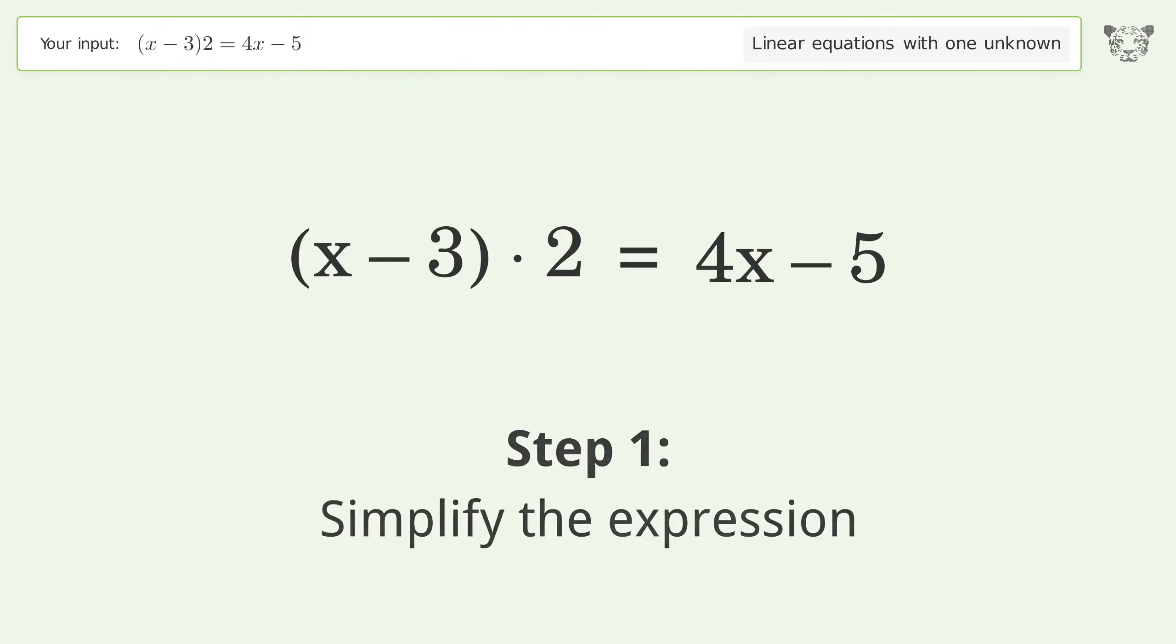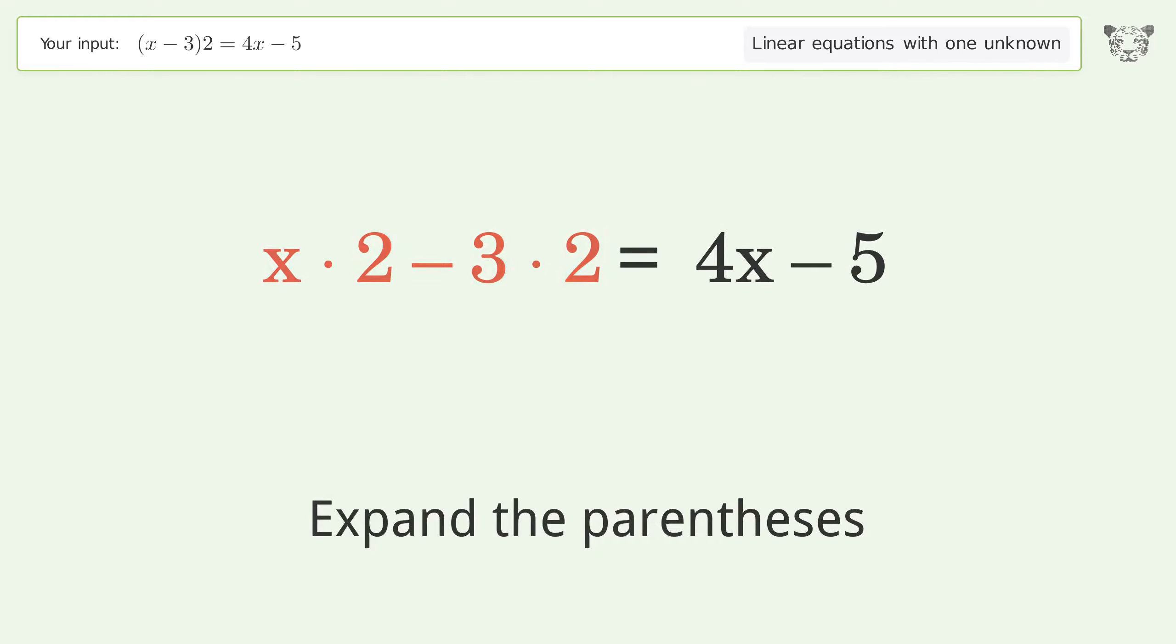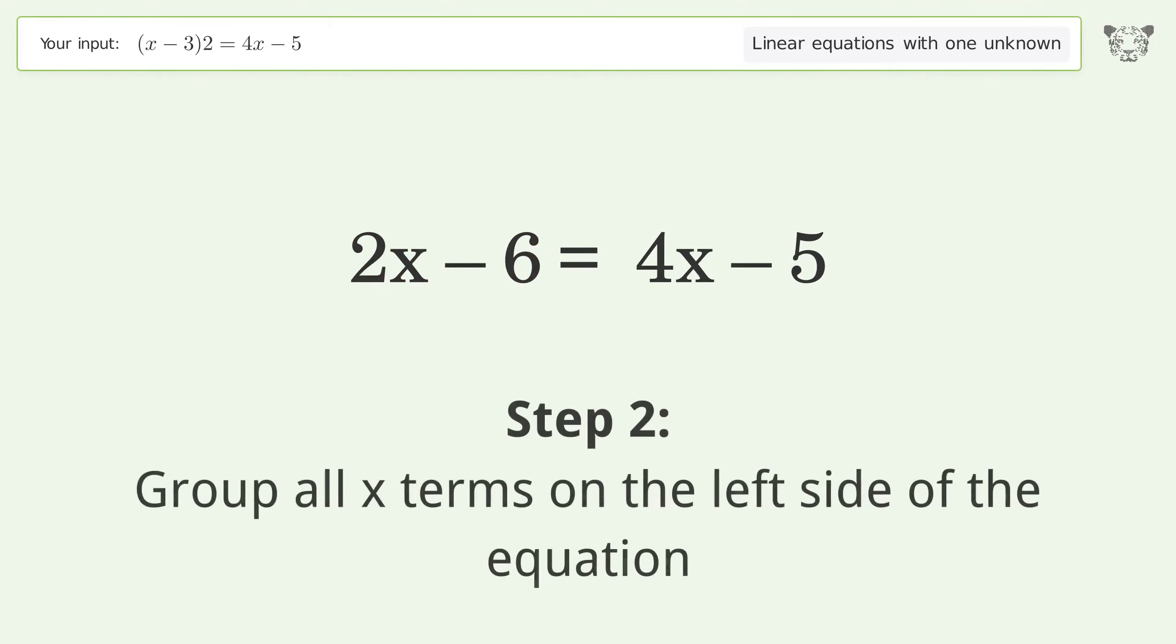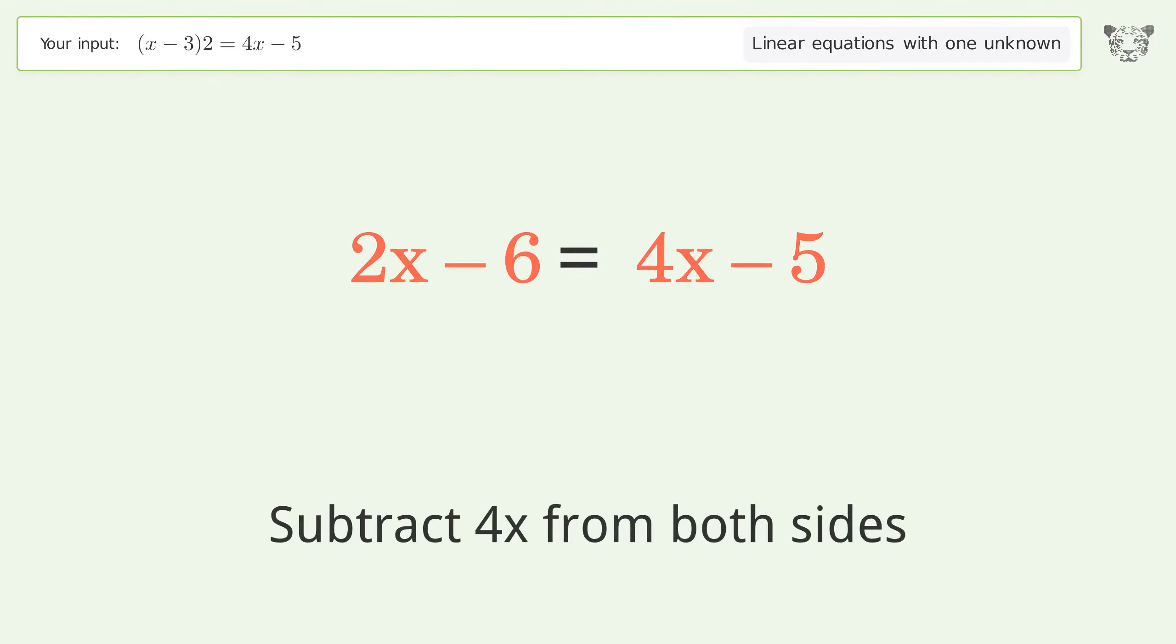Simplify the expression. Expand the parentheses. Simplify the arithmetic. Group all x terms on the left side of the equation. Subtract 4x from both sides.